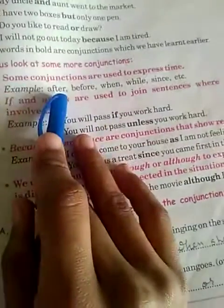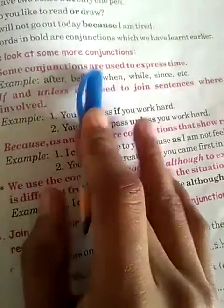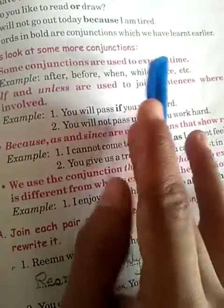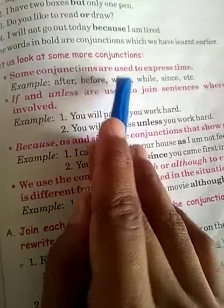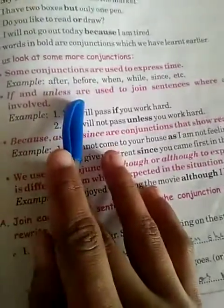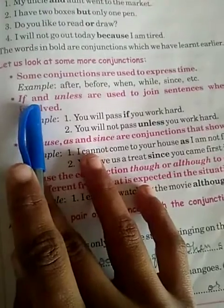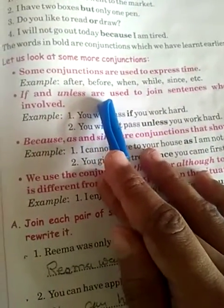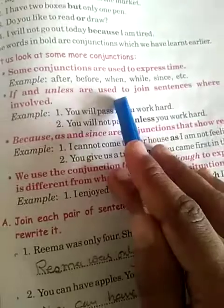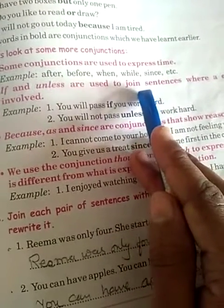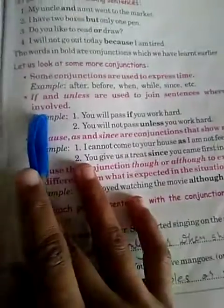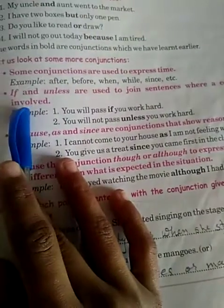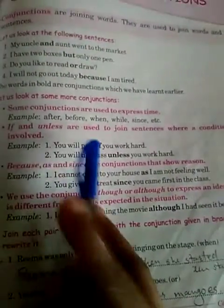Some conjunctions are used to express time. Toh time express karne ke liye kuch conjunctions use hote hain — woh hain: after, before, when, while, since, etc. Yeh sari time ko express karne ke liye use hote hain.